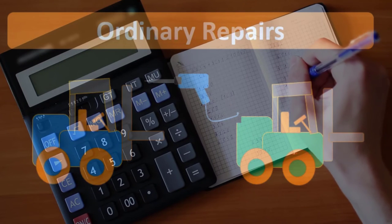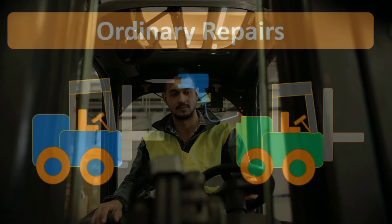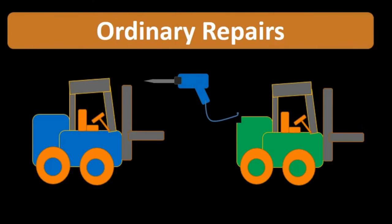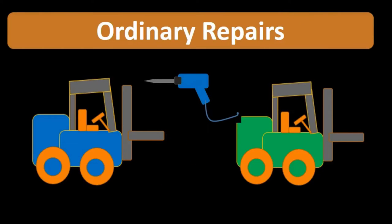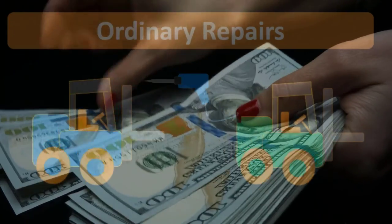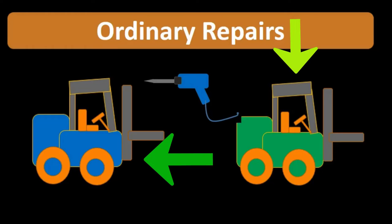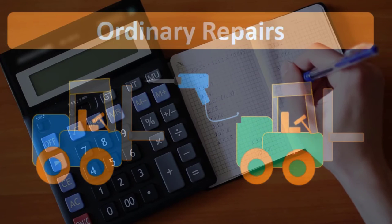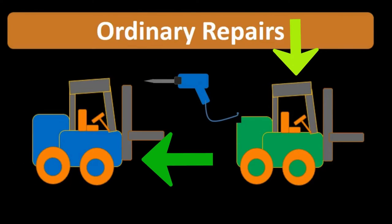So one of the key factors is whether these expenses are keeping the forklift in a normal condition, or whether they are intended to extend the life or make the forklift useful for something other than it was originally intended for. Ordinary expenses will be expensed during the time period, while capital expenditures that improve or extend the life will be capitalized on the balance sheet as an asset and then depreciated.